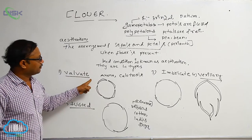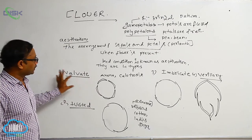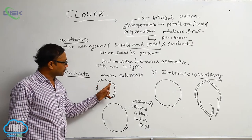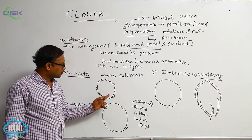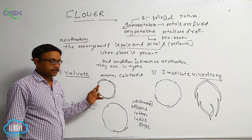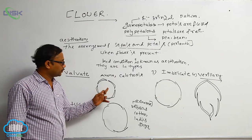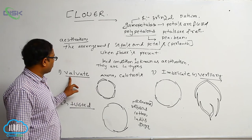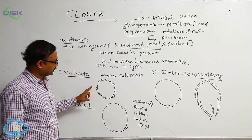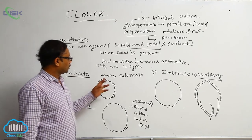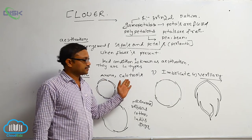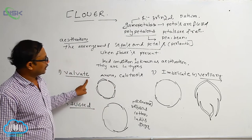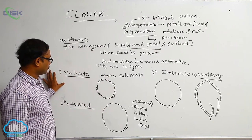The first type is valvate aestivation. In valvate aestivation, observe the diagram — the perianth members are arranged closely. They do not overlap and are present without fusing. All are present without overlapping, so this type is known as valvate aestivation. Examples: Arum of calyx and Calotropis of calyx show valvate aestivation.